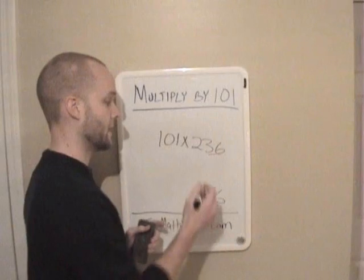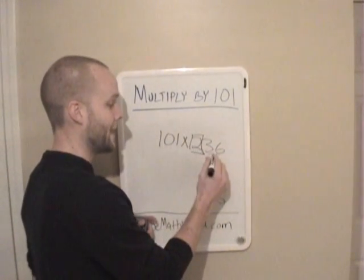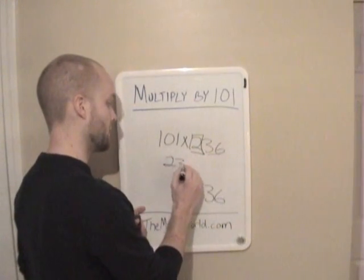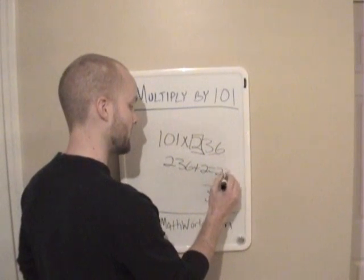The next thing we need to do is take this first number, the two, and we need to add it to the entire number, 236. So we're going to do 236 plus 2 equals 238.